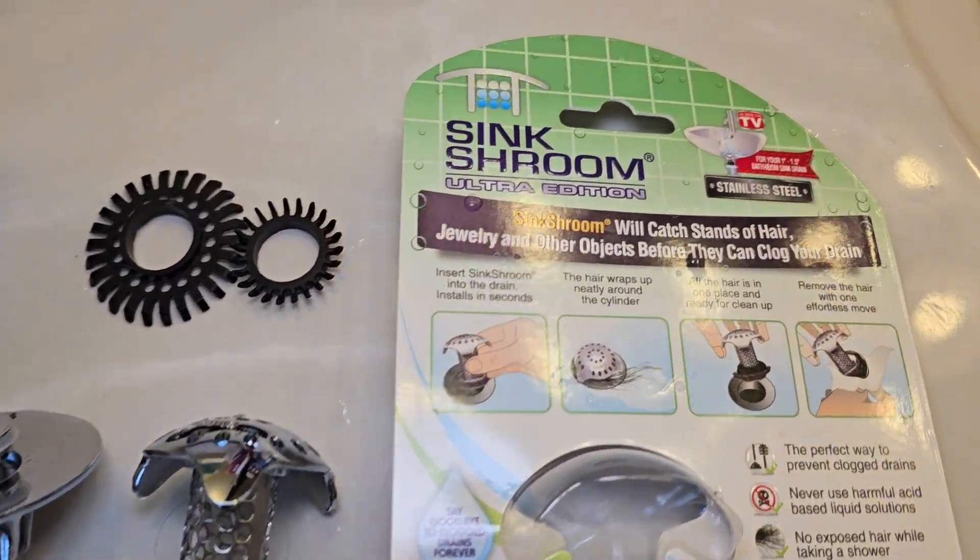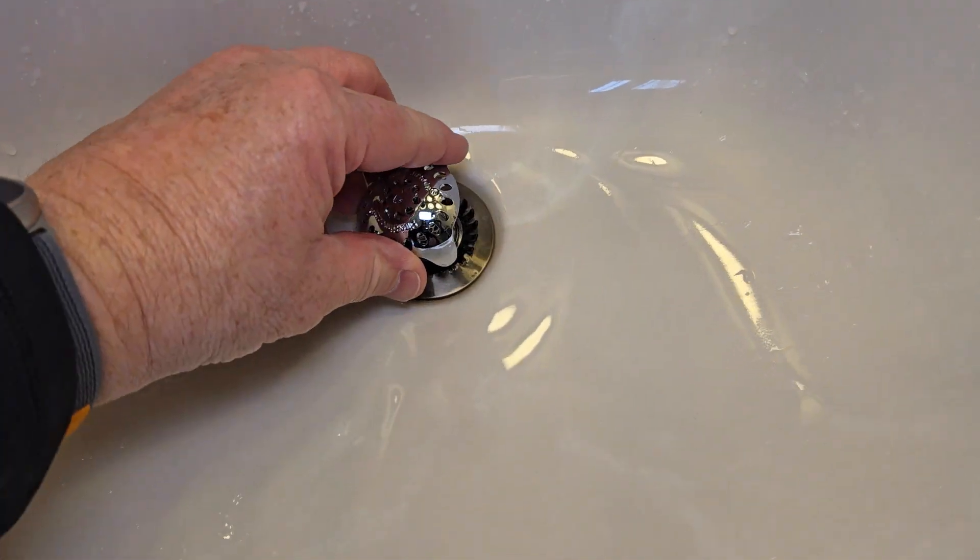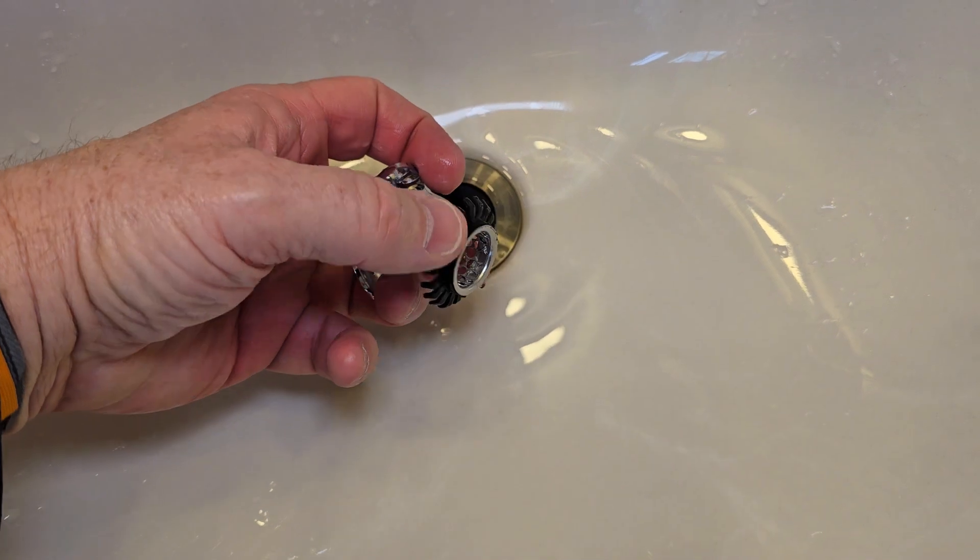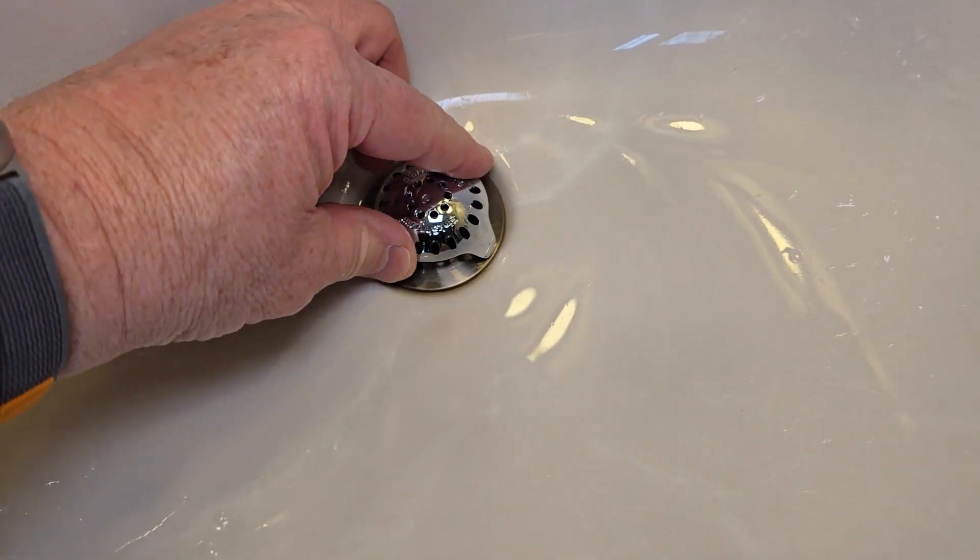So the Sink Shroom Ultra Edition is not really a stopper, but it does help prevent hair from going down the sink. You can remove that, install that, depending on what size you have, you can change out that adapter ring, but it just kind of holds it in place.